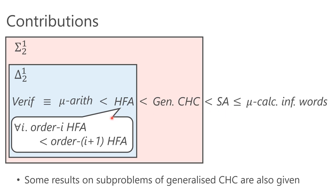We also show that the order hierarchy of higher-order fixed-point arithmetic is strict — the higher the order of a formula, the harder the validity problem becomes. Some subproblems of generalized constrained horn clauses are also discussed. In the rest of the talk, I will give the definitions of these problems and explain the results in more detail.